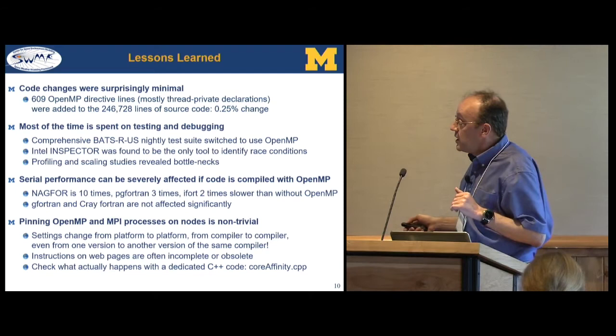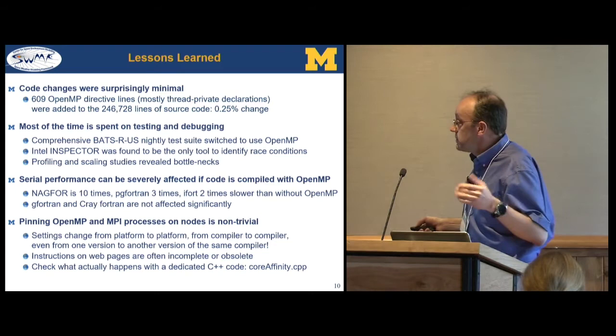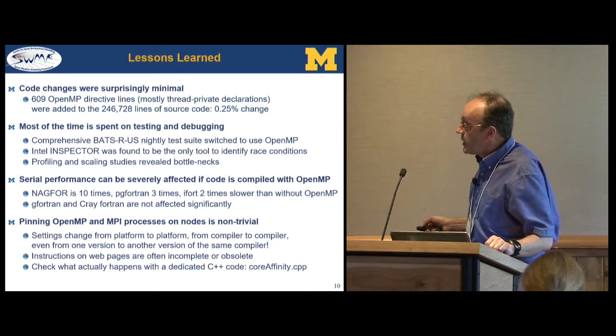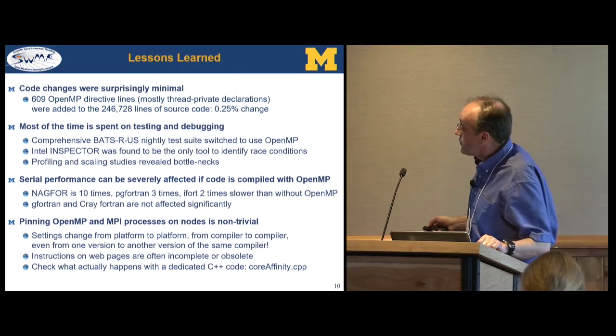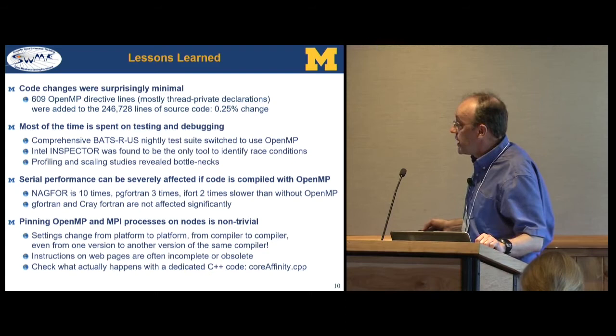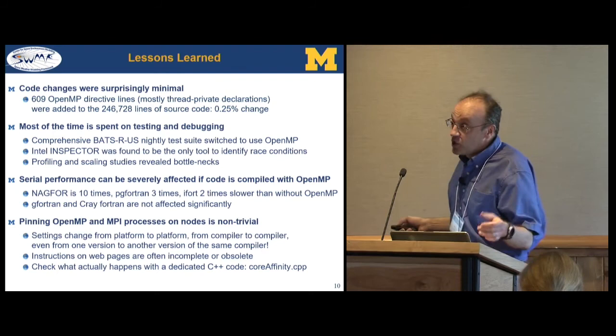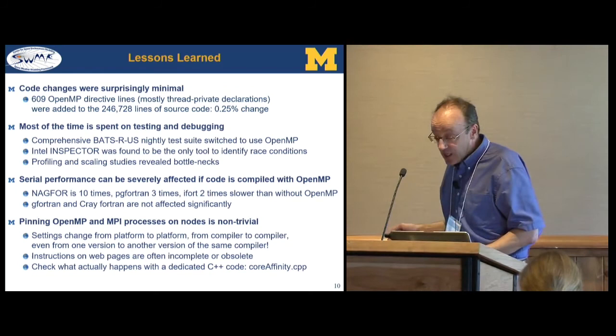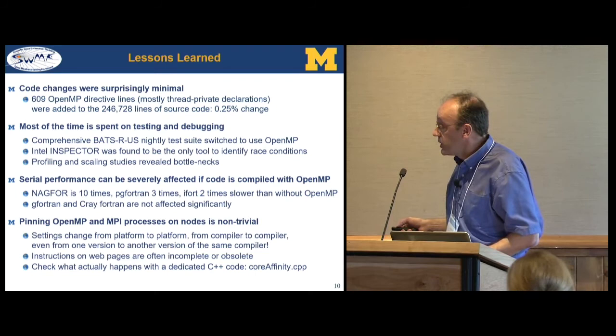GFortran and Cray Fortran seem to be unaffected by OpenMP. We also realized how non-obvious it is to set up an OpenMP-MPI run. Every platform is different, every compiler is different, and even version-to-version changes affect how you have to set things up — environment variables, arguments to job submission. What's on web pages is often incomplete and obsolete. What worked best was a C++ code that reports which thread is running on which core and which MPI process, so we could verify that workload distribution was happening as expected.